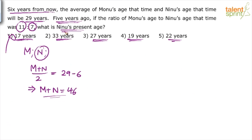If I subtract 5 from 33, I get 28. Is 28 a multiple of 7? Yes — so the second option satisfies the second condition, and we keep it. Third option: present age 27, five years ago it was 22. Is 22 a multiple of 7? No, so third option is eliminated. Fourth option: present age 19, five years ago it was 14. Is 14 a multiple of 7? Yes, so this is also possible.